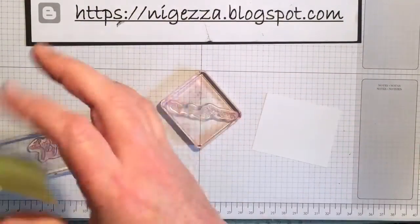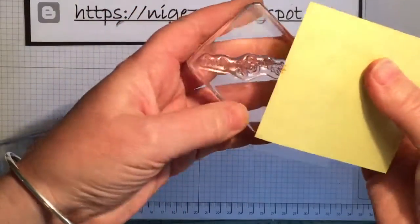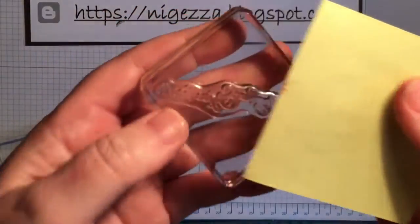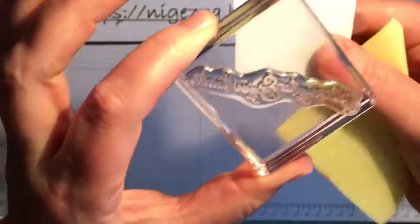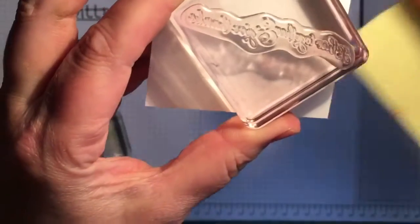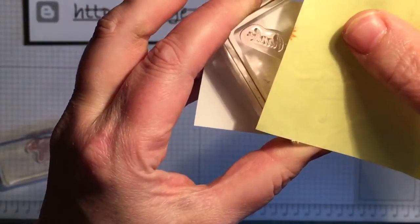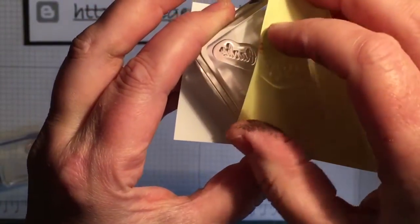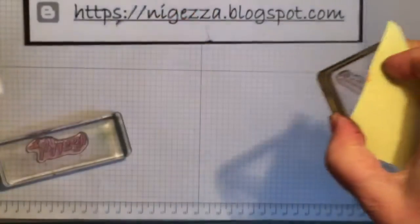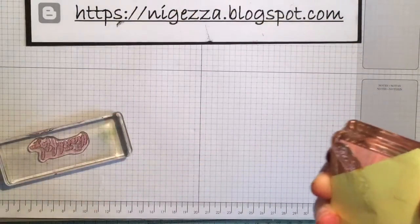If you take a post-it note and stick your post-it note, because it's difficult to see because it's photopolymer, but if you get to the word thanks and stick your post-it note on, then get your ink pad.